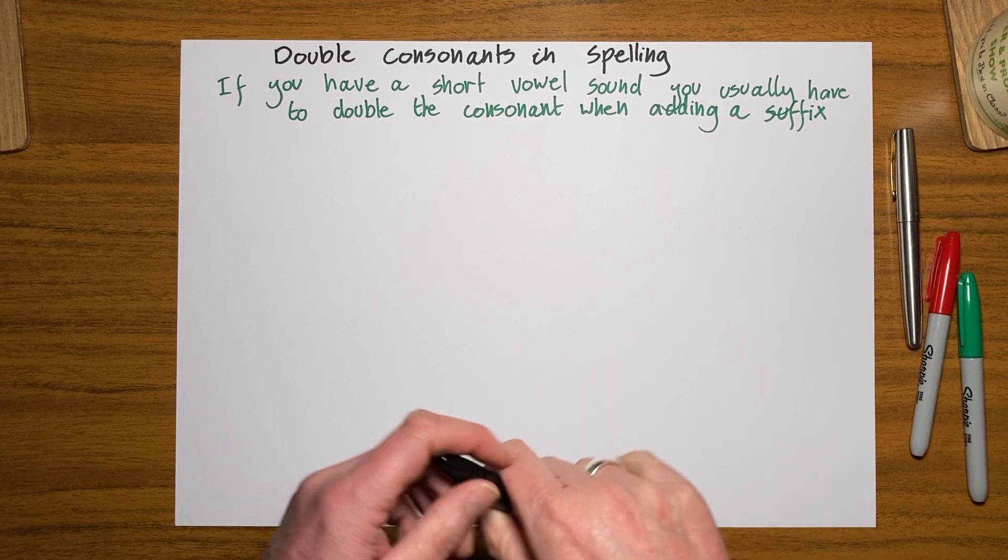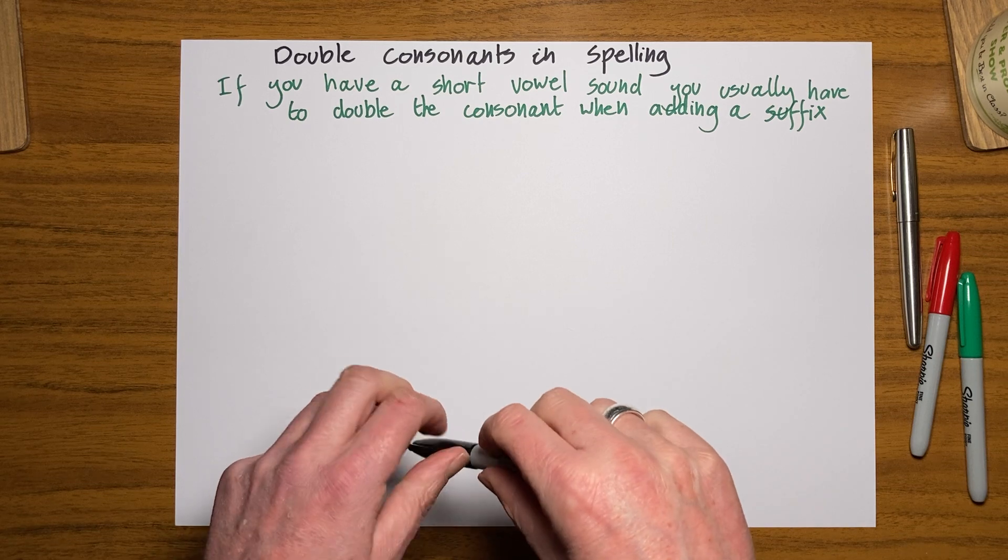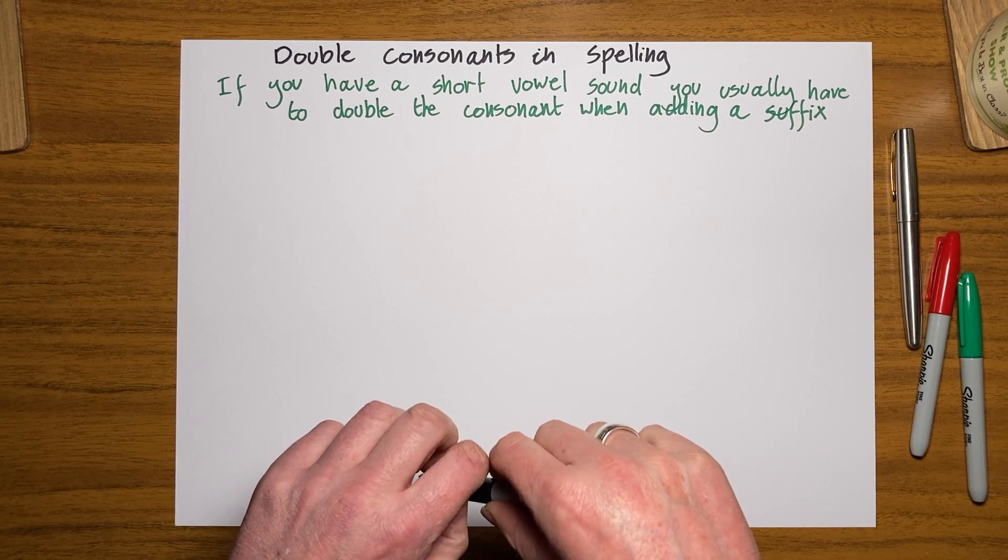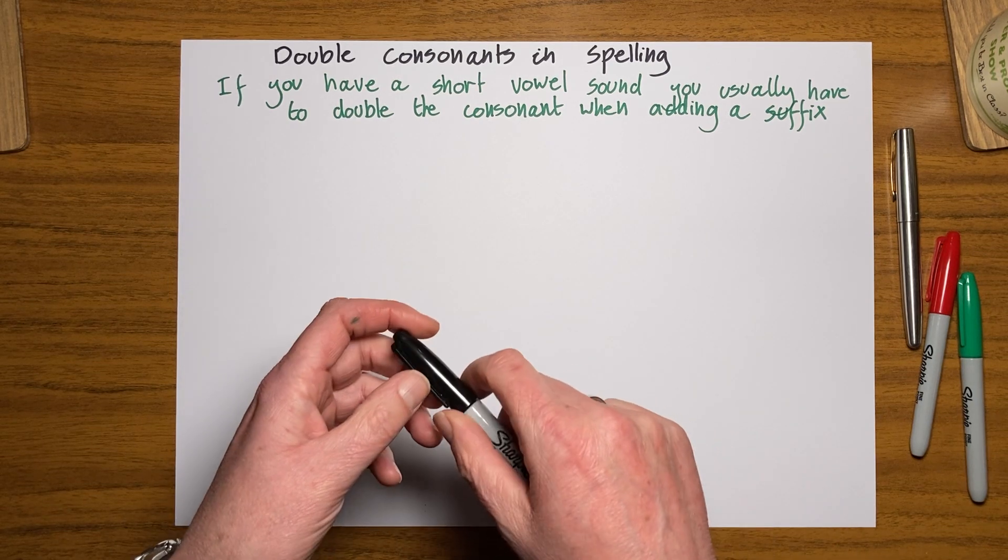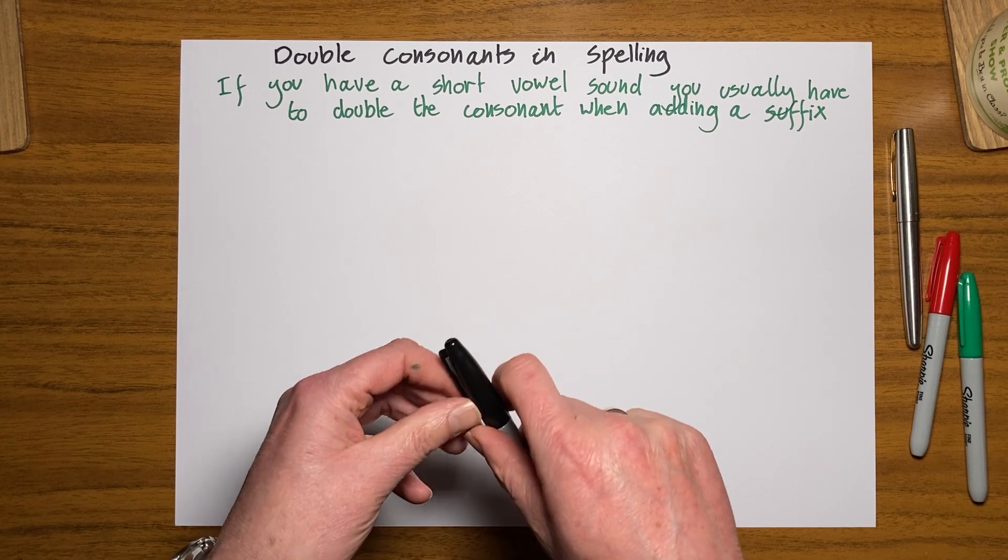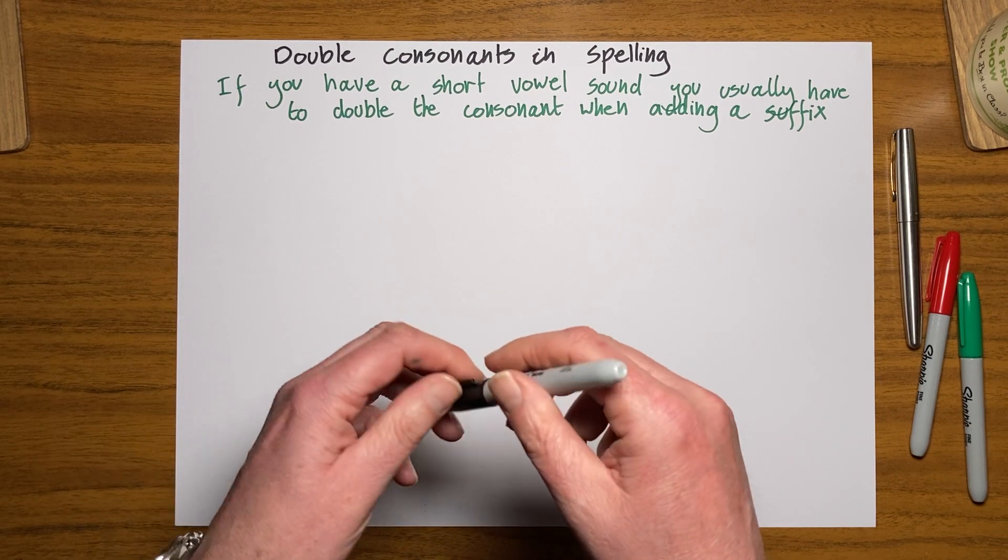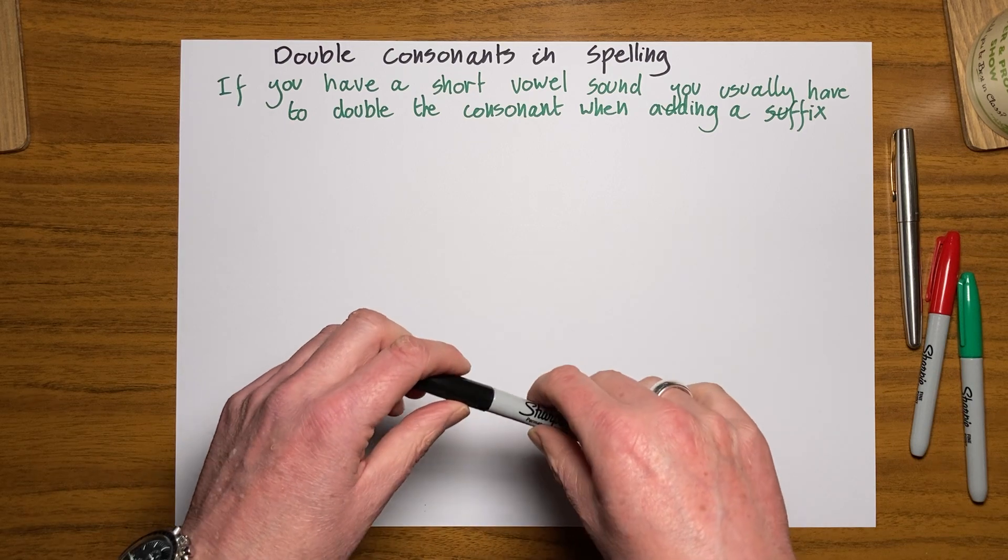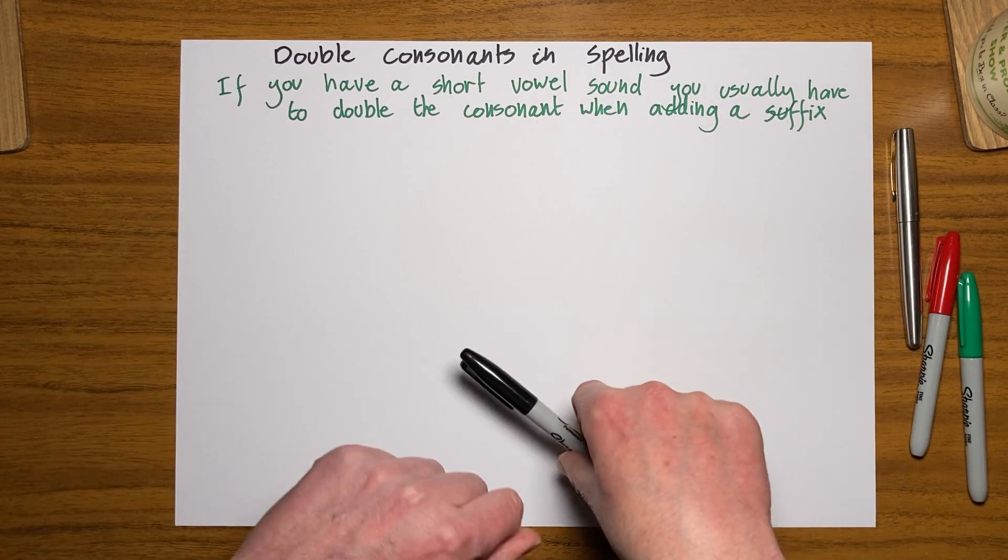Hello and welcome back. In this video I'm going to talk to you about double consonants in spelling. This is to make sure that if you're talking about going swimming and you want to write about it, that you write that you're going swimming, not that you're going swyming. Let me explain it all to you.